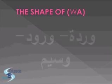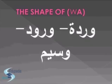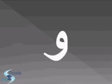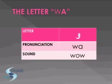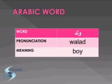What is the shape of WA? Look carefully and find out the shape of WA. This is the letter WA and it has an equivalent sound in English — 'wa' like 'waaw.' The Arabic word that starts with WA is 'walad' — walad means a boy.